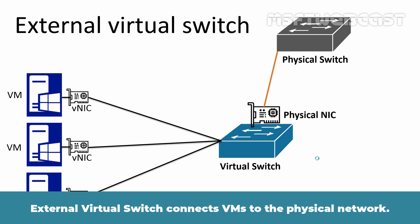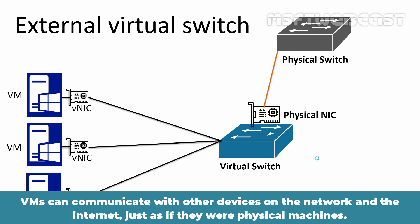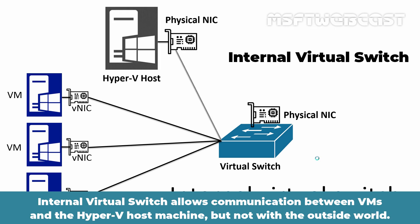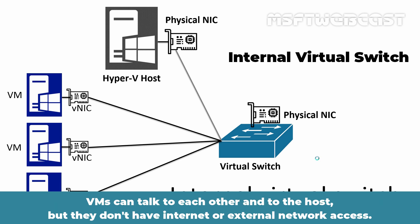An external virtual switch connects VMs to the physical network. VMs can communicate with other devices on the network and the internet, just as if they were physical machines. An internal virtual switch allows communication between VMs and the Hyper-V host machine, but not with the outside world. VMs can talk to each other and to the host, but they don't have internet or external network access.